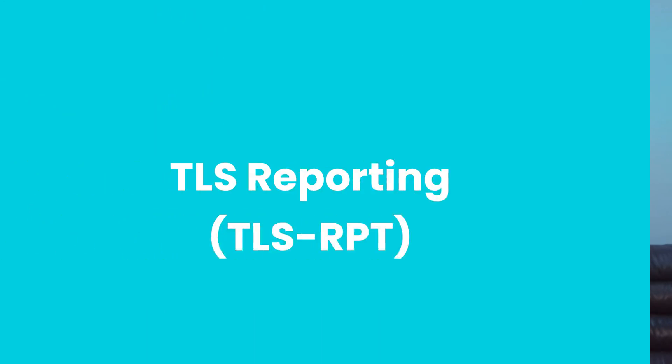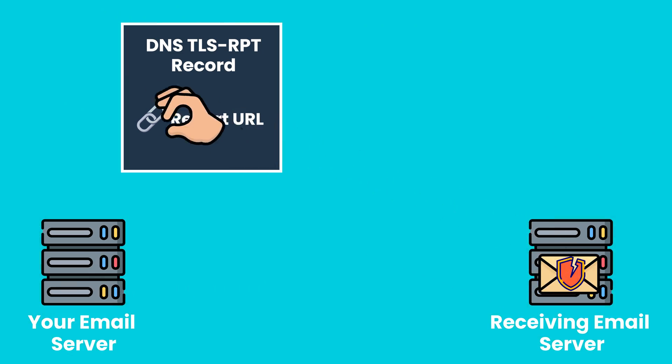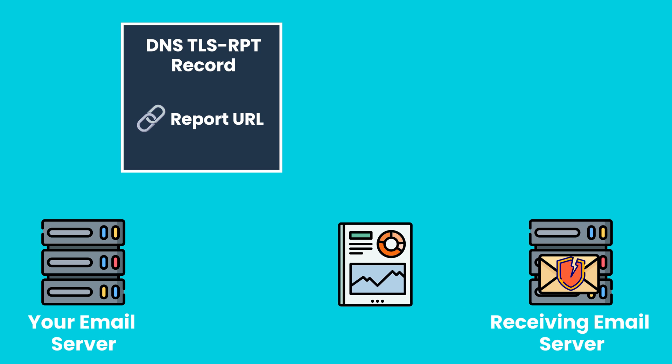That report feature brings us to the sister protocol known as TLS-RPT, or TLS Reporting. This protocol allows you to receive daily reports from external mail servers that send you email. The report highlights any email delivery issues that happened when an email was sent over an unencrypted channel. It's a straightforward protocol that works through a DNS text record with instructions on where email servers should send reports. This is really important because it makes you aware of emails you aren't receiving because of this specific configuration, and can be a huge pain point for IT teams troubleshooting why a user is not receiving an email.